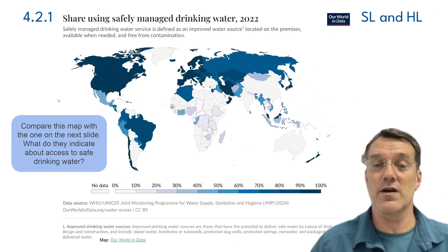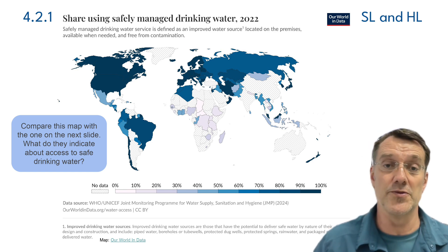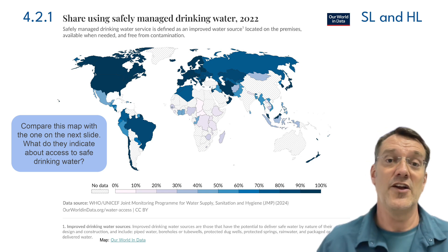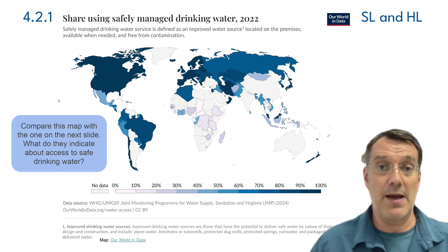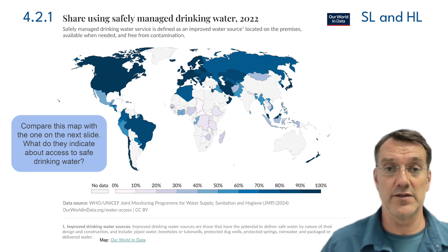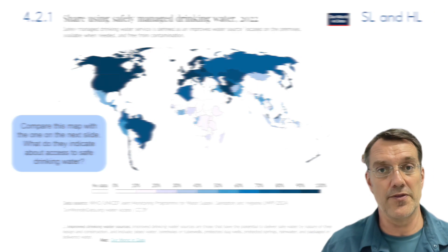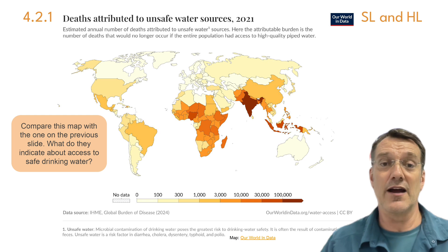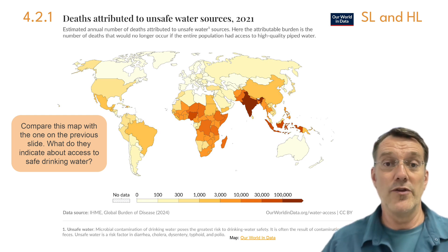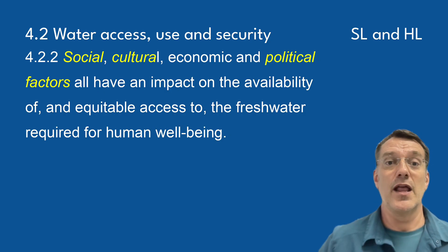These maps reveal some striking patterns in global water access. The first map shows safely managed drinking water distribution in 2022. Notice how high-income countries in North America and Europe generally have pretty high access rates, while parts of Africa show lower percentages of access. The second map shows us mortality data related to unsafe water. When comparing these maps, you can identify regions where water security challenges directly impact human health. The relationship is clear: inadequate water security leads to preventable deaths.